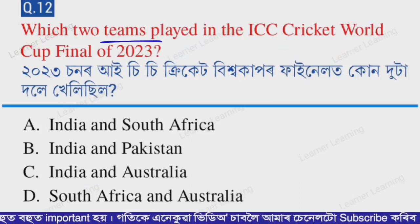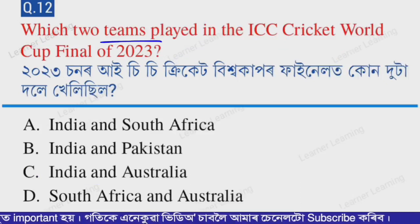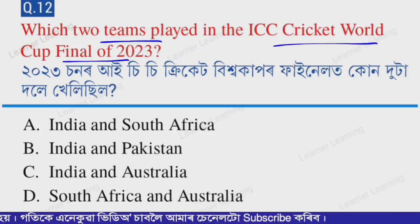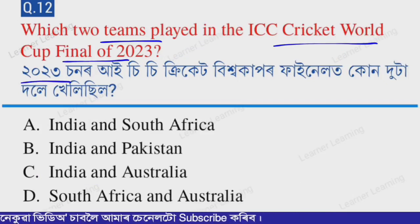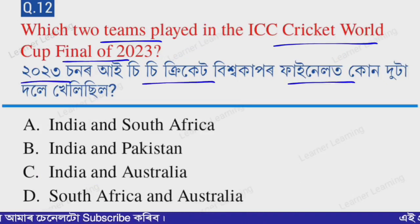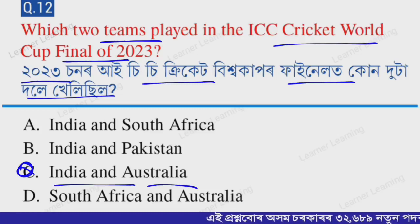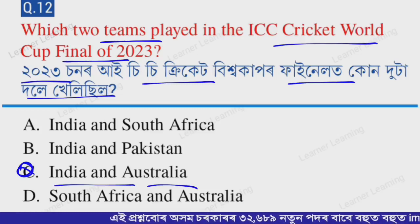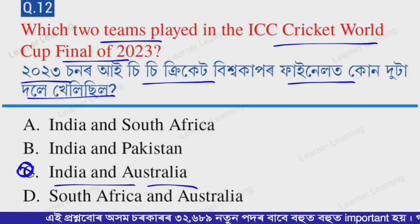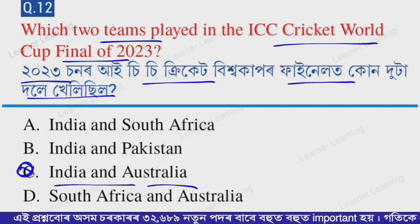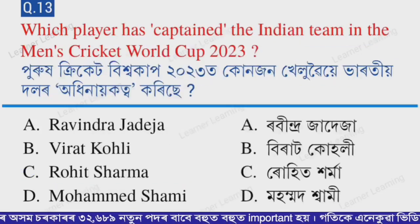Next question: which two teams played in the ICC Cricket World Cup final of 2023? The correct option is option C — India and Australia. India and Australia played in the ICC Cricket World Cup 2023 final.